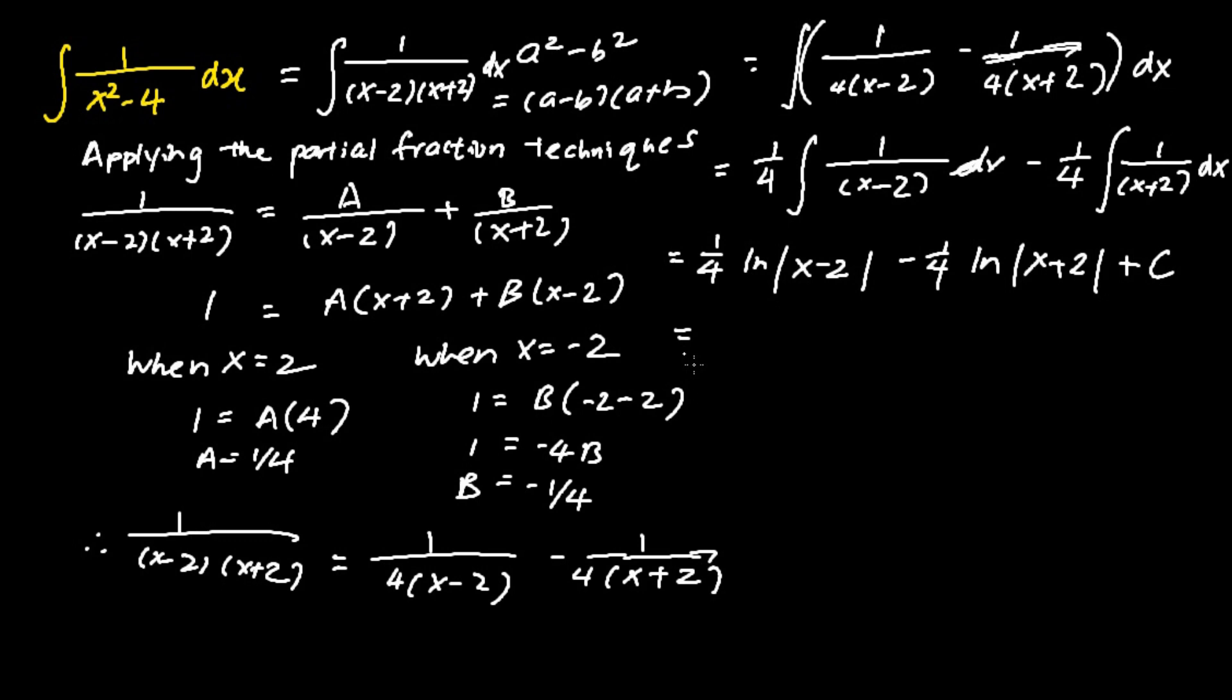We now have the solution 1 quarter ln absolute (x minus 2) minus 1 quarter ln absolute (x plus 2). I can factor the 1 quarter out.